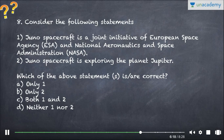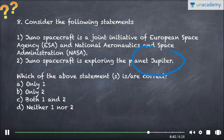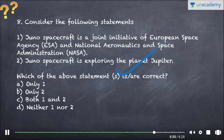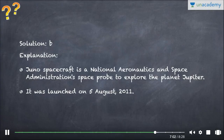Question eight: Consider the following statements. Hope you are pausing the video and marking answers before moving forward. Juno spacecraft is a joint initiative of the European Space Agency and NASA — this is incorrect. Juno has nothing to do with the European Space Agency; it is solely a NASA mission. It is exploring the planet Jupiter. Answer is B — only the second statement is correct. Juno was launched on 1st August 2011.